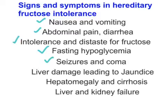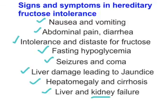Sometimes hypoglycemic episodes can lead to death. Patients with hereditary fructose intolerance can also develop liver damage leading to jaundice with elevated bilirubin levels, hepatomegaly, and cirrhosis of the liver, ultimately leading to liver failure and also kidney failure. The cause of death in hereditary fructose intolerance is most commonly attributed to liver and kidney failure. This disorder follows an autosomal recessive inheritance pattern with a frequency of 1 in 20,000 to 1 in 30,000 population.